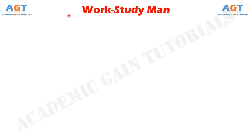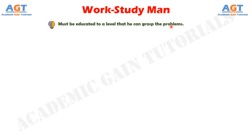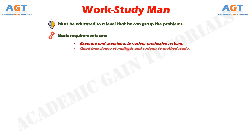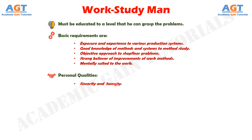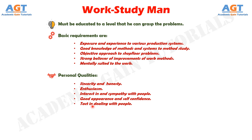There are some qualities and qualifications expected from a work study man. He must be educated to a level where he can grasp the problems, preferably with a university degree in engineering if expected to take responsibilities in production management. Basic requirements include exposure and experience with various production systems, a good knowledge of methods and systems of work study, an objective approach to shop floor problems, a strong belief in improving work methods through work study, and being mentally suited to the work. Personal qualities must include sincerity and honesty, enthusiasm, interest and sympathy with people, good appearance and self-confidence, and tact in dealing with people.